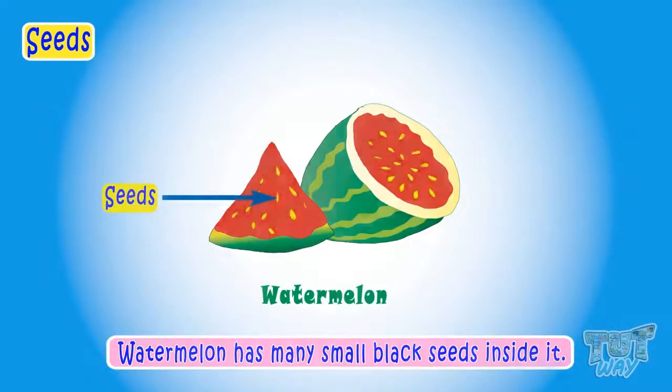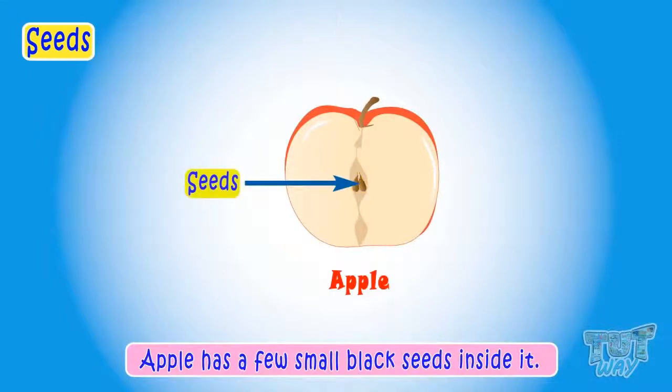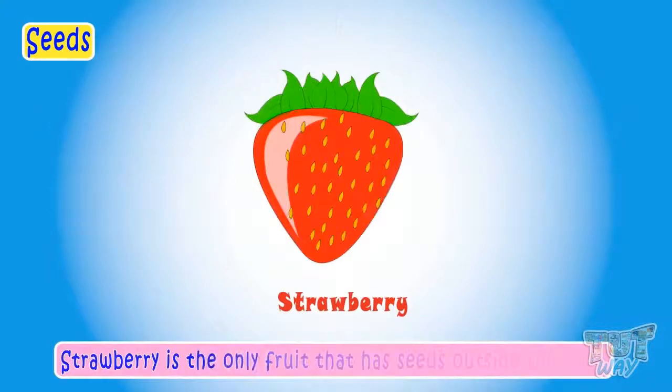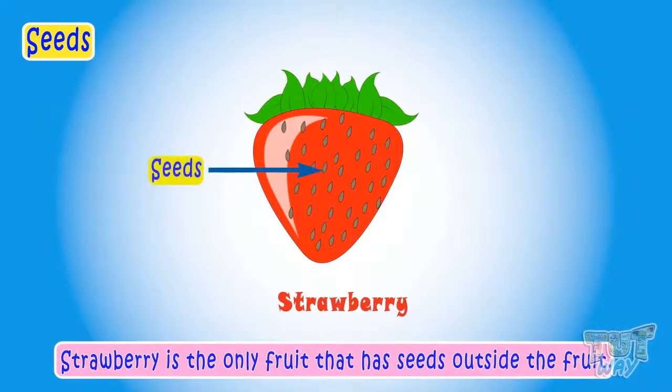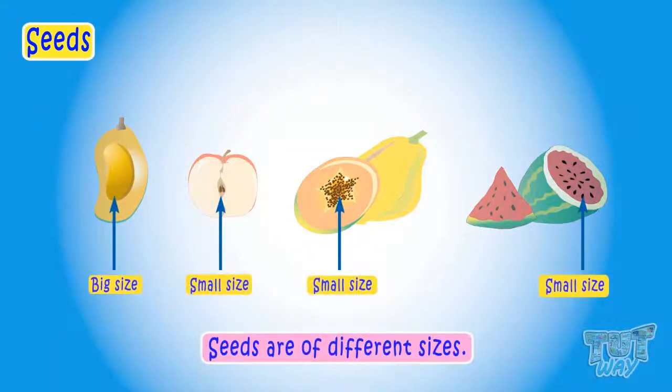Watermelon has so many black seeds inside it. Apple has a few small black seeds inside it. Strawberries has so many seeds outside it. Strawberry is the only fruit that has seeds outside it. These are small seeds that are outside the fruit.